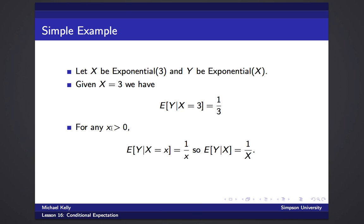And this would be true for any value x that's positive. So x is going to take on some positive value little x, and then knowing what value x takes on, we could say the expected value of y is 1 over little x. And so in general, as a function of the random variable x, the expected value of y given x is 1 over the random variable x.